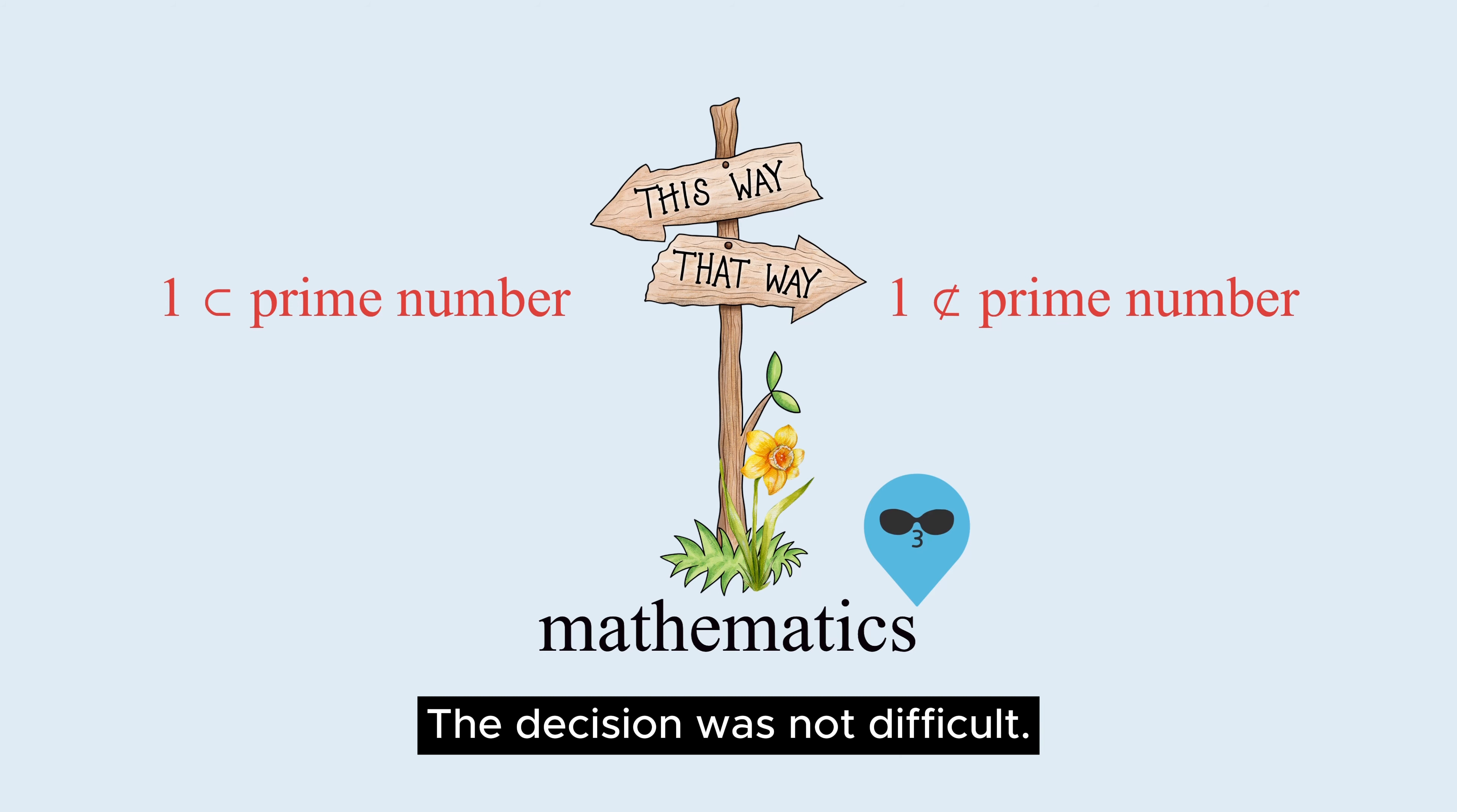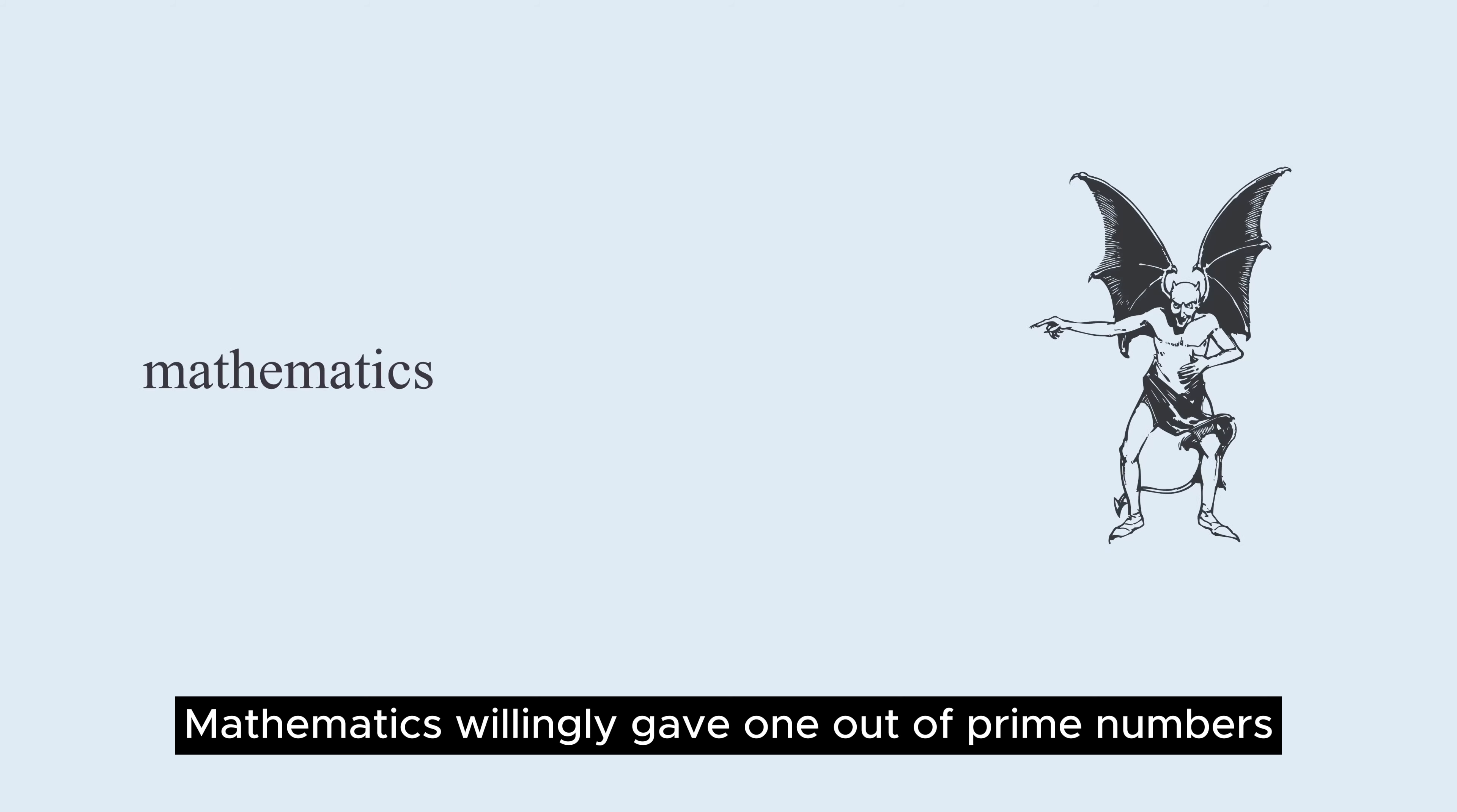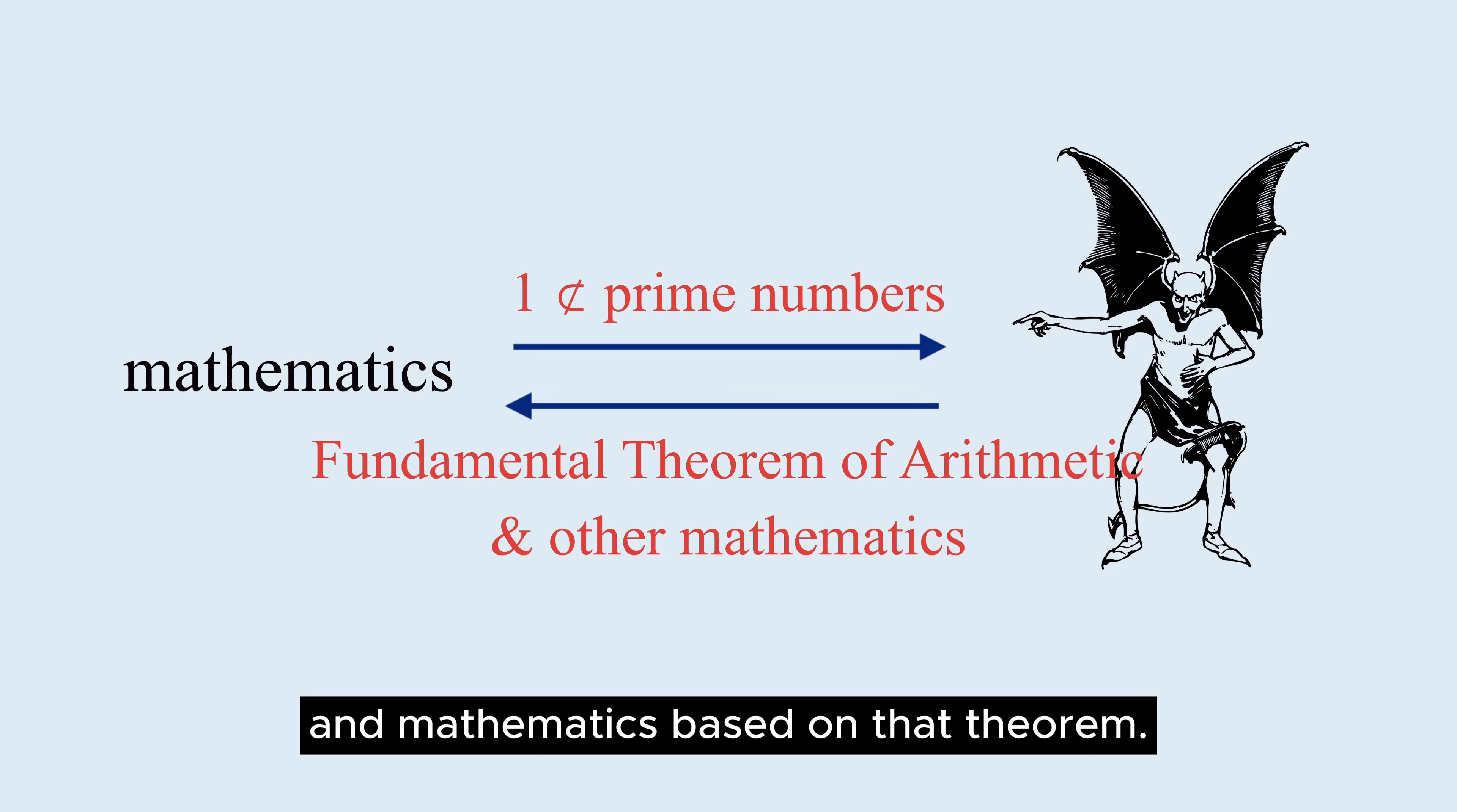The decision was not difficult. Subtracting one from prime numbers proved to be more advantageous for math. Mathematics willingly gave one up from prime numbers in order to obtain the fundamental theorem of arithmetic and mathematics based on that theorem.